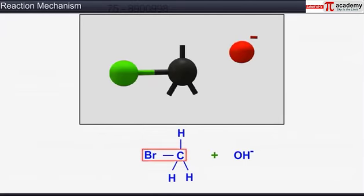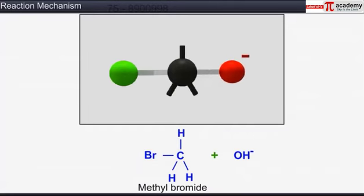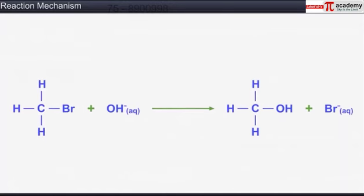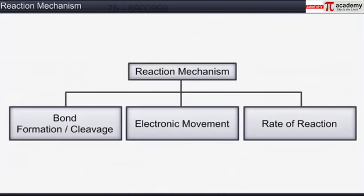The covalent bond between carbon and bromine of methyl bromide gets cleaved and a new bond between carbon and hydroxide ion is formed. The energetics during breaking and forming of bonds, movement of electrons, and the rate of reaction in a sequential description are referred to as the reaction mechanism.